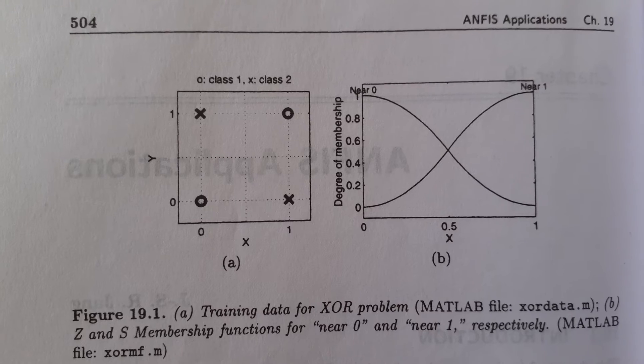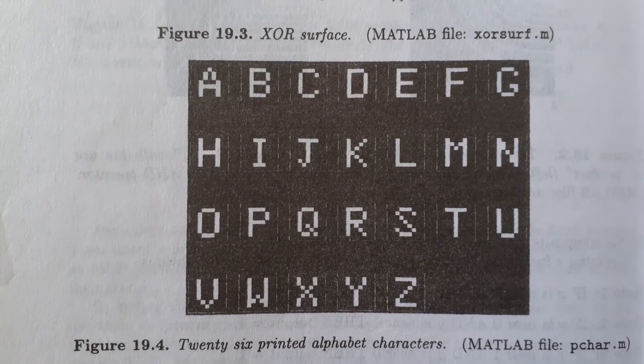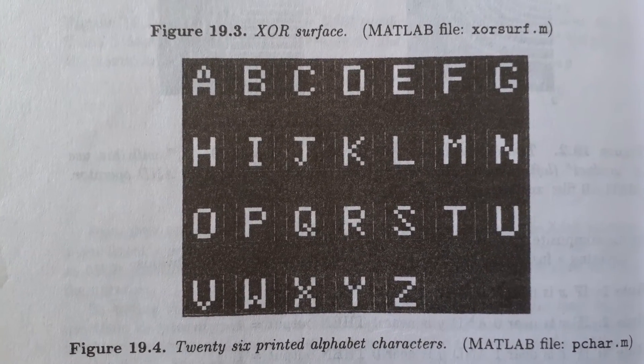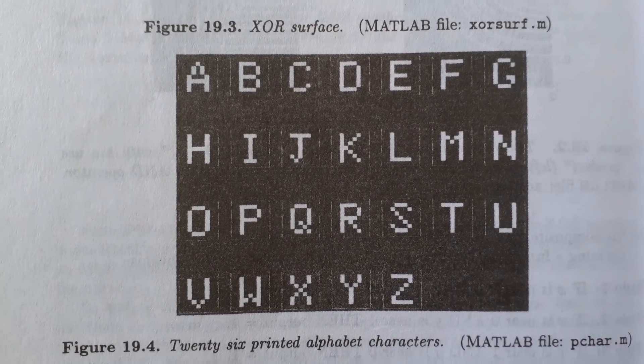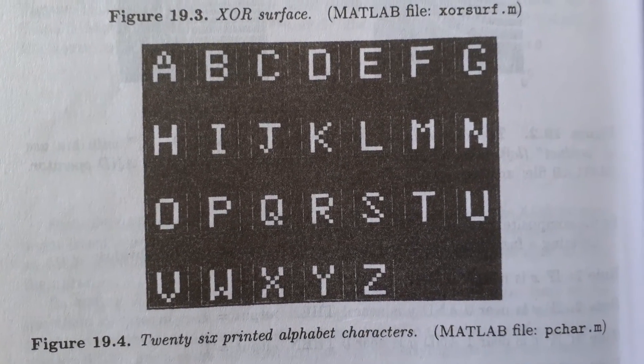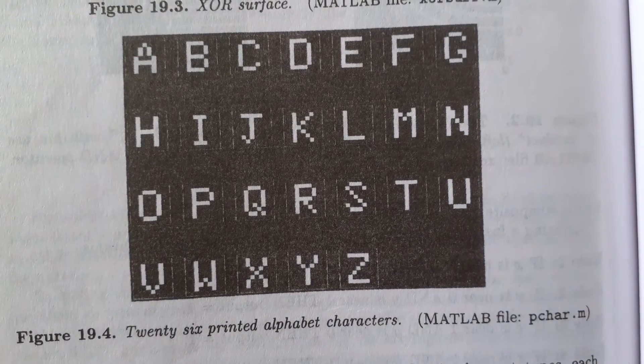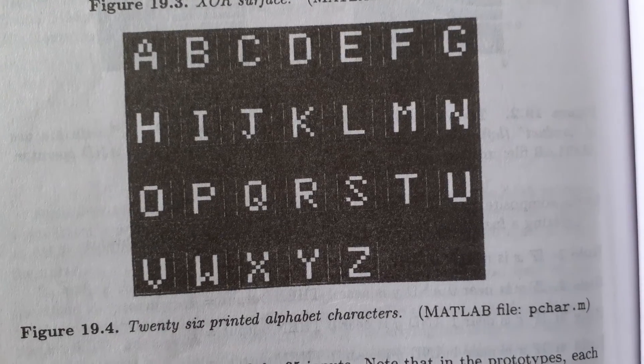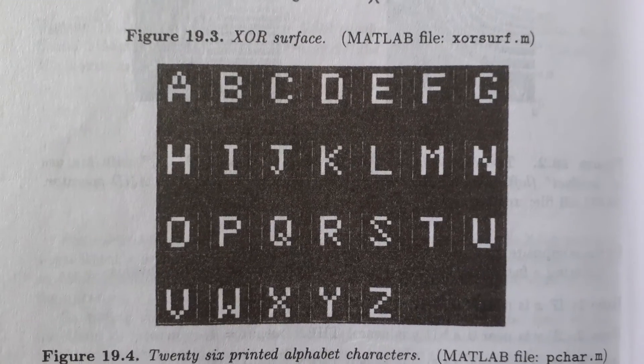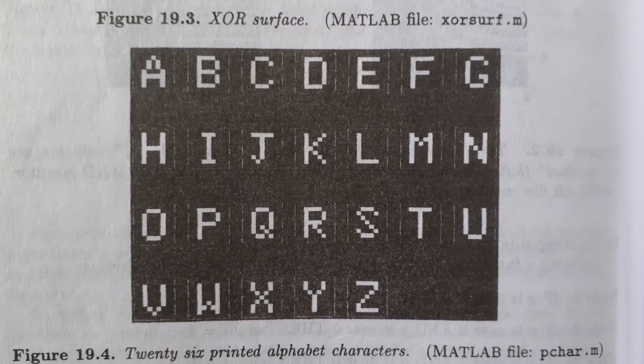Now we can move on to a more challenging problem, that is printed character recognition. In PCR, each of 26 letters is defined as a 7 by 5 pixel matrix. The challenge is to build a fuzzy inference system that can classify a given set of 35 pixels to one of the 26 alphabet characters. These 26 prototypes are noise-free and we can employ the concept referred to previously. Construct membership functions for each of the 35 inputs.